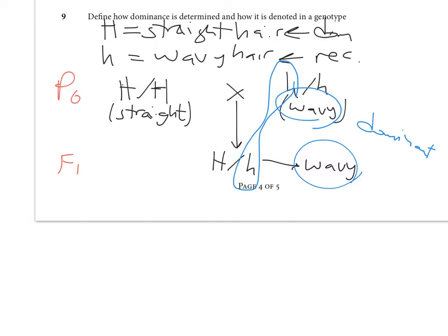That's how we determine dominance — that cross. Two purebreeding parents for two different traits, cross them together, and look at the phenotype of their offspring. Once we learn about dominance, the dominant allele gets assigned a capital letter and the recessive allele gets assigned a lowercase letter.